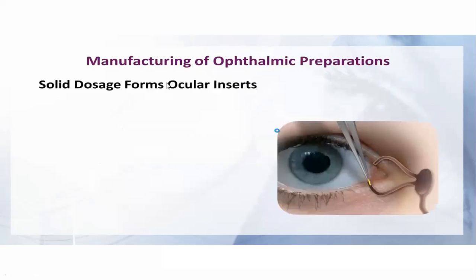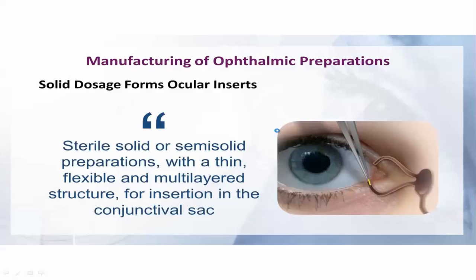The next dosage form is ocular inserts — devices to be introduced into the eye cavities, such as the lacrimal sac. Ocular inserts are sterile solid or semi-solid preparations with a thin, flexible, and multi-layered structure for insertion into the conjunctival sac. The layers may be single or multiple.